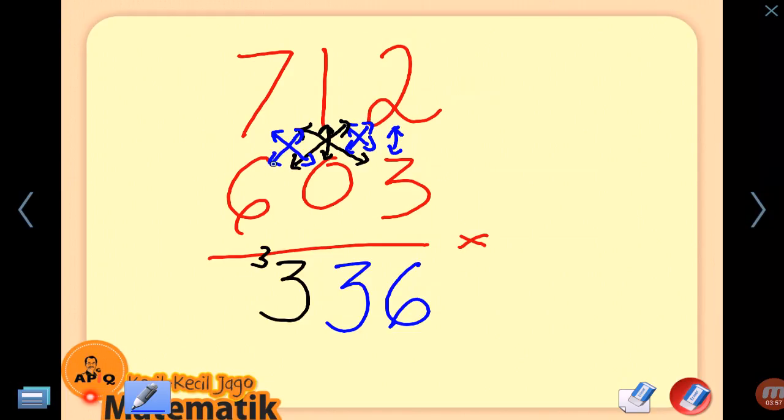We get 6, 6 plus 3 is 9. 6 plus 3 is 9. And the last step: 7 times 6.